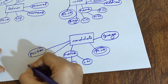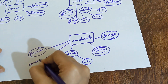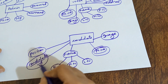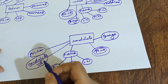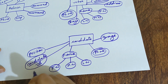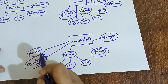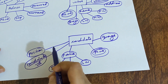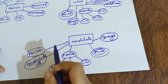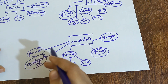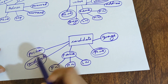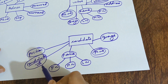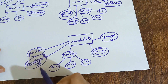The next important attribute is Candidate ID. Every candidate will have a unique ID, so I must underline this since it is a primary key. If five candidates are standing for the position of MLA, all five will have a different Candidate ID — no two candidates will have the same ID. That is the reason why Candidate ID is a primary key and must be underlined.